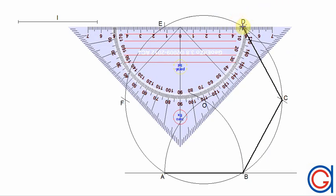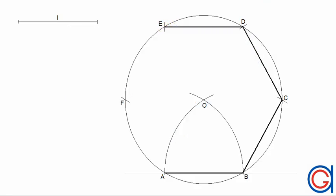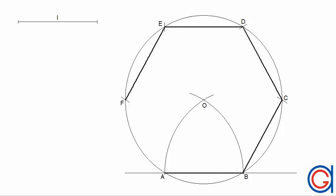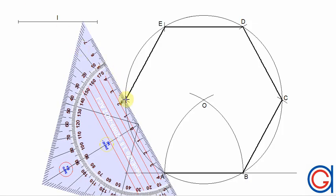Now D to E. And then E to F. Finally we can close our hexagon joining vertex F back to A.